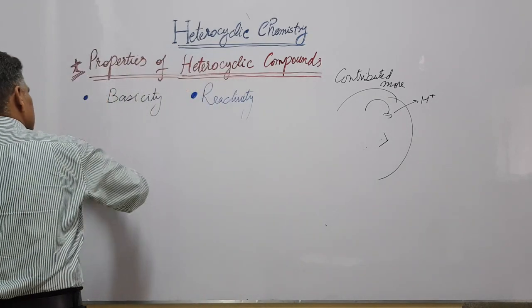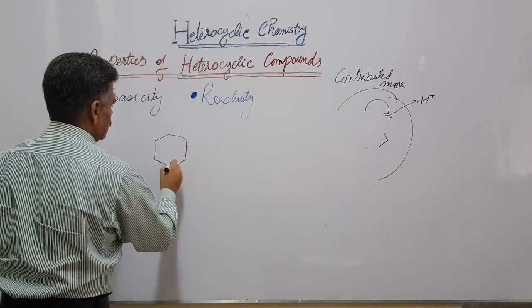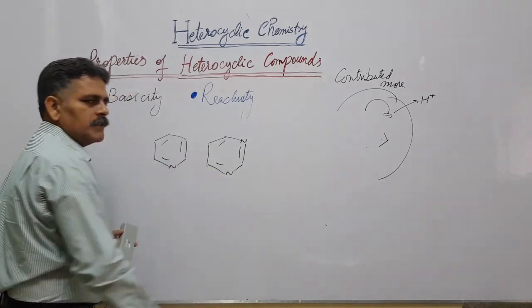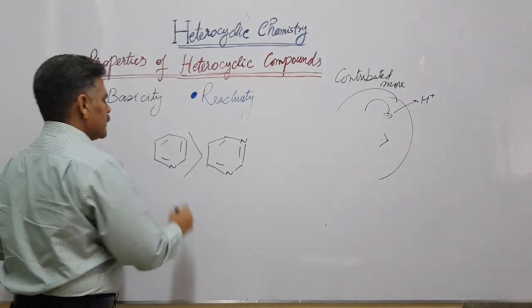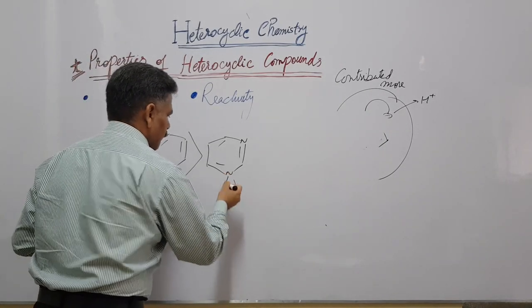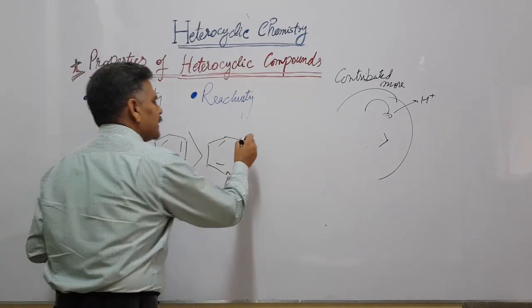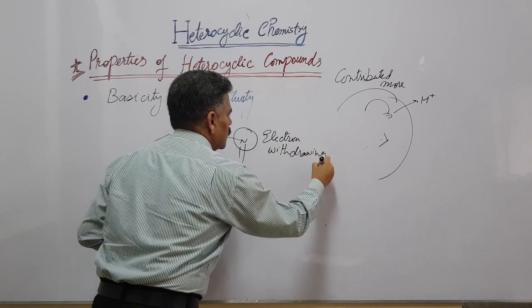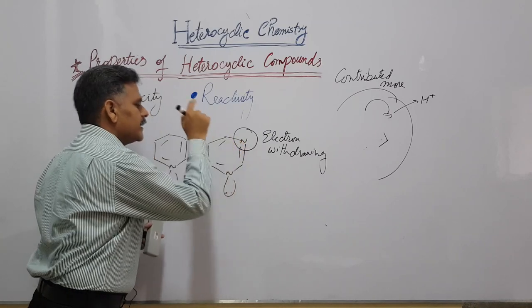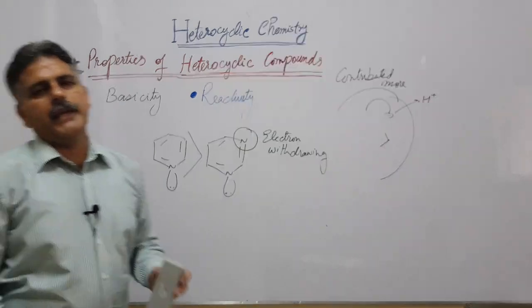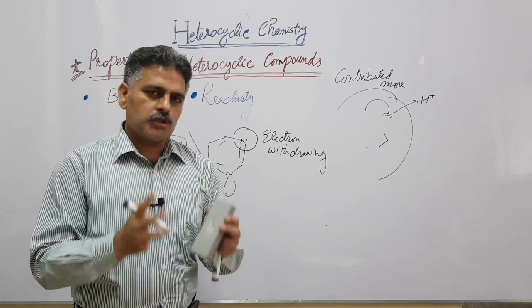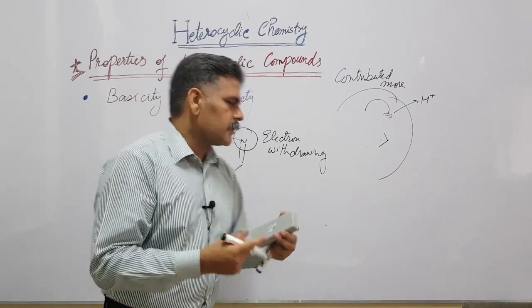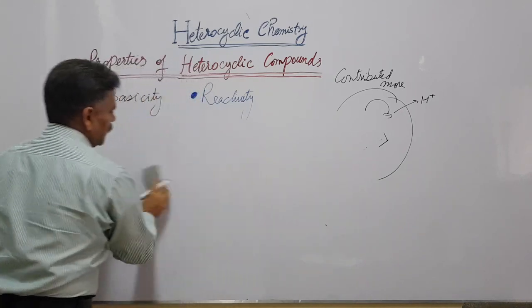For six-membered rings having two heteroatoms, pyrimidine is less basic as compared to pyridine. Although the lone pairs of both nitrogens in pyrimidine are available to donate to H⁺, the effect of the second nitrogen is electron-withdrawing. Due to the presence of this electron-withdrawing nitrogen, pyrimidine is less basic than pyridine. In conclusion, electron-donating groups increase basicity, while electron-withdrawing groups decrease it.